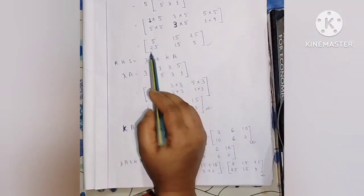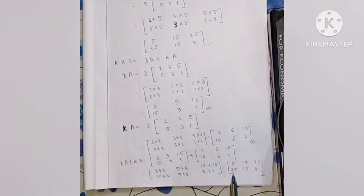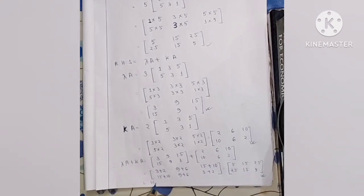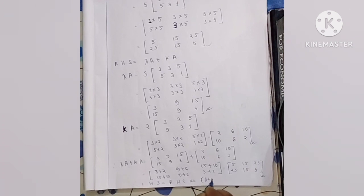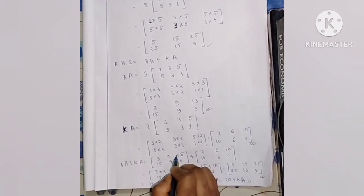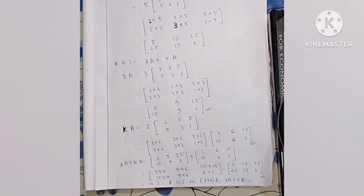The right-hand side is [5, 15, 25; 25, 15, 5], which equals the left-hand side [5, 15, 25; 25, 15, 5]. Therefore left-hand side equals right-hand side, and the equation (lambda plus k) times A equals lambda A plus k A is proved. Please subscribe, like, and press the bell icon to get notifications for the next video.